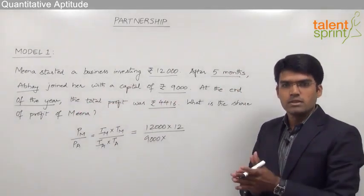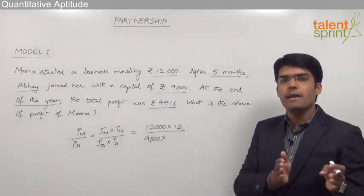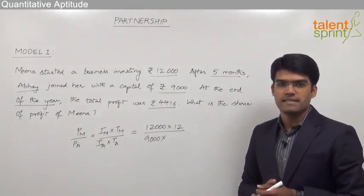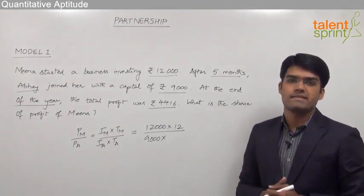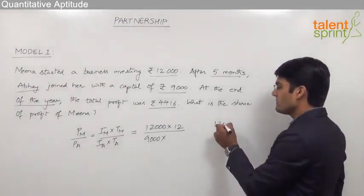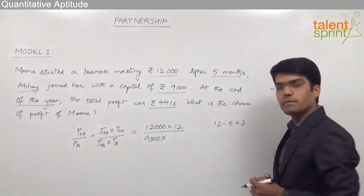That means in the total period of 12 months Abhay was not present for the first 5 months as he has joined after 5 months. Very clearly he was present only for the last 7 months. That is nothing but 12 months minus 5 which is 7 months.